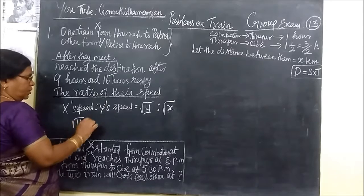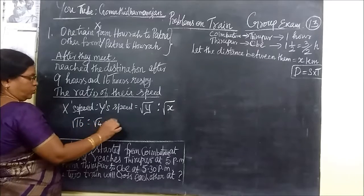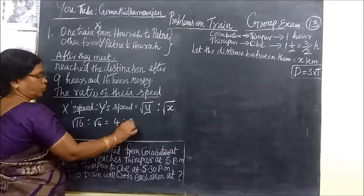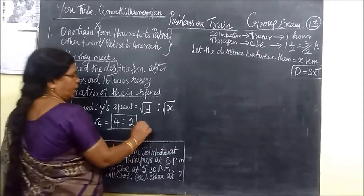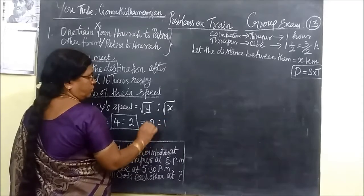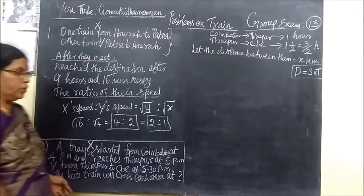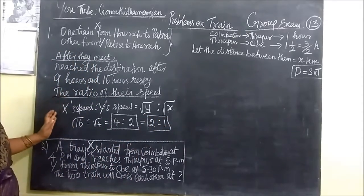And X is 4. So 4 is to 2. So the ratio is 4 is to 2. Train Y is to 1. So this is very simple problem.